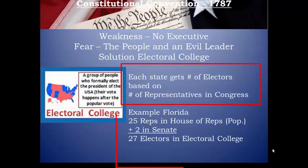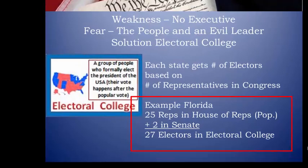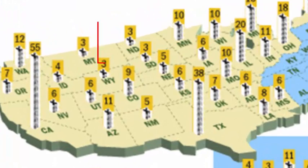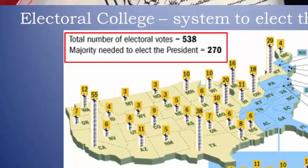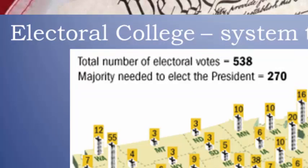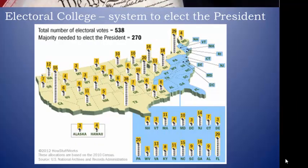For example, Florida has 25 representatives in the House of Reps and two senators, giving them a total of 27 electors. Every state is guaranteed at least three electors because each state has two senators and at least one representative. So states like North Dakota with a very small population would have three electoral votes, whereas California has 55 electors. There are a total of 538 electors today, so a candidate needs 270 electoral votes to win. This system was partly confusing on purpose — to protect us from ourselves. This still exists today, and while some people think we should get rid of it, it's kind of part of our tradition.